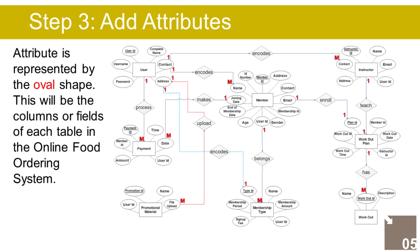The last part of the ERD process is to add attributes to our entities. The User entity has the following attributes: ID (Primary Key, represented with underline), full name, contact, email address, username, and password.